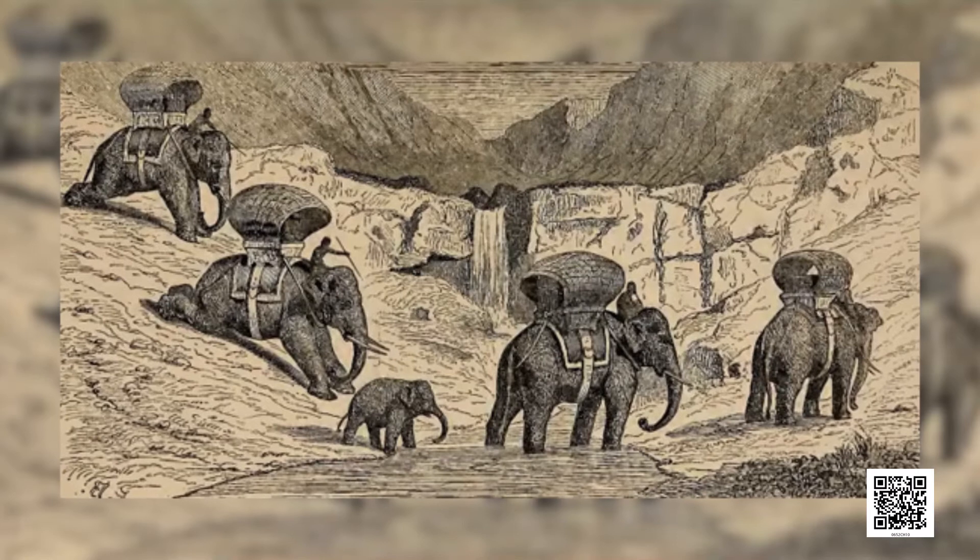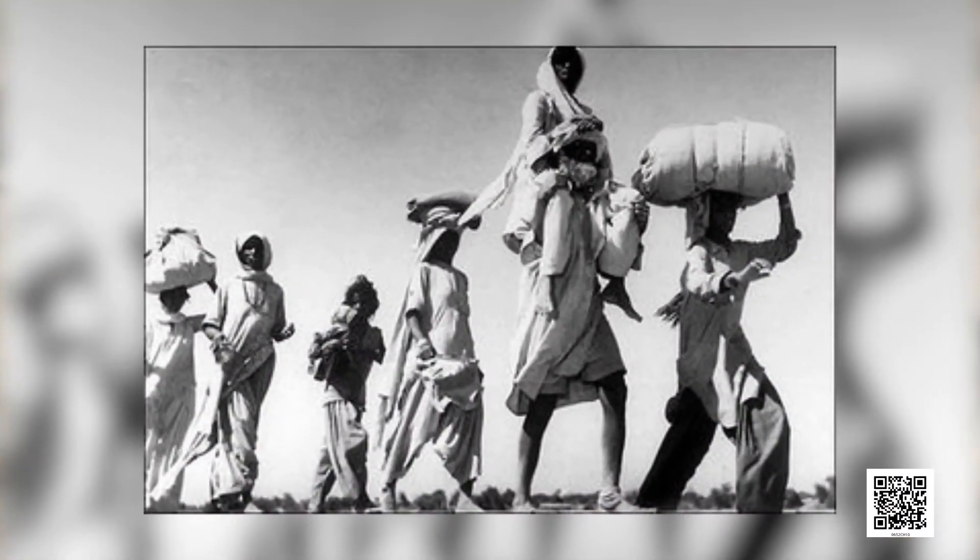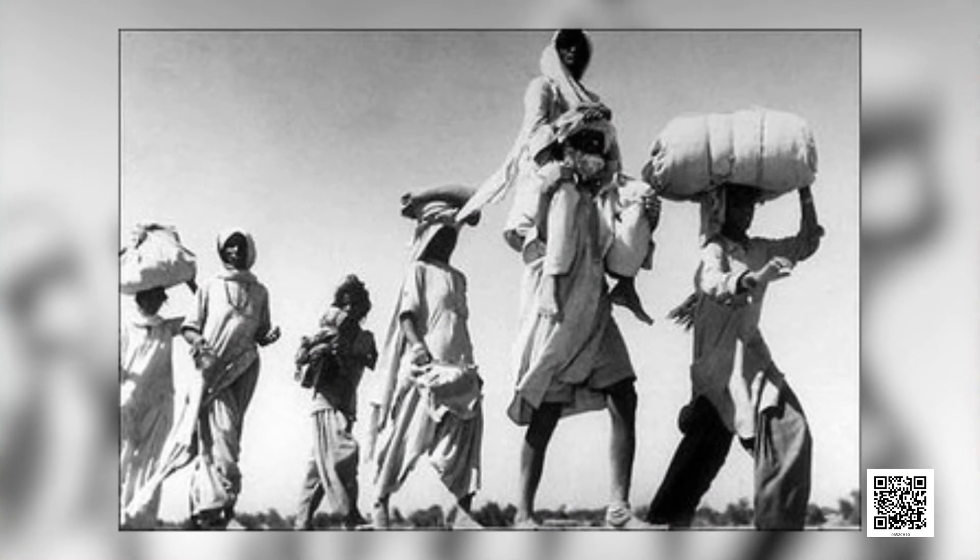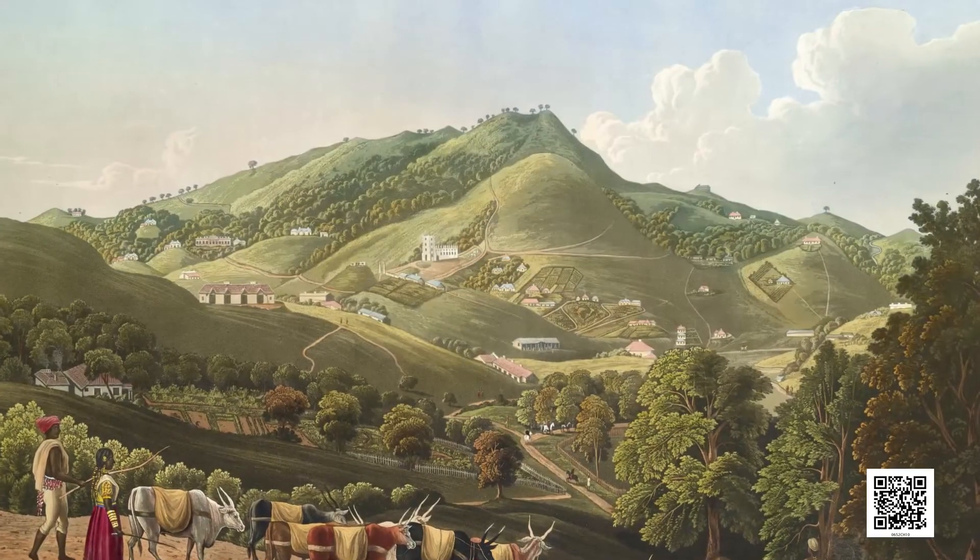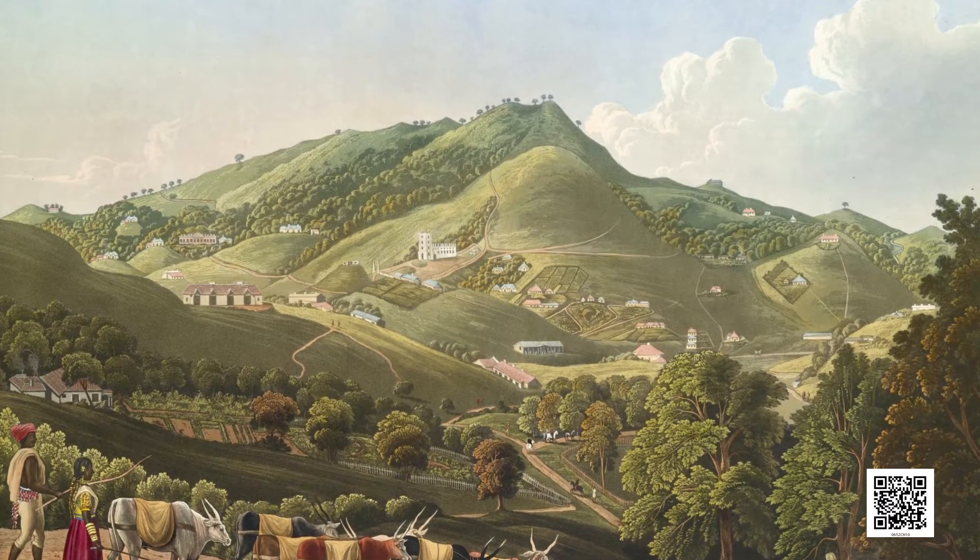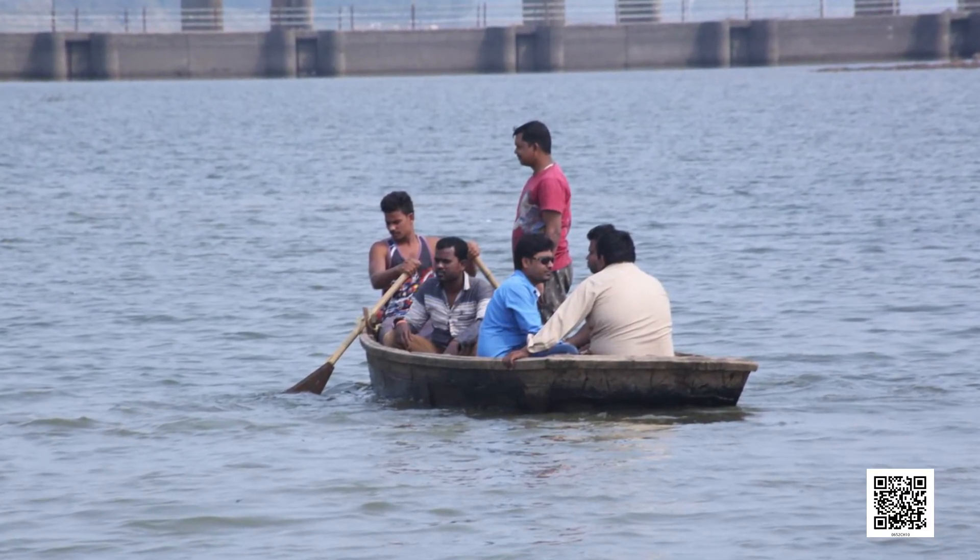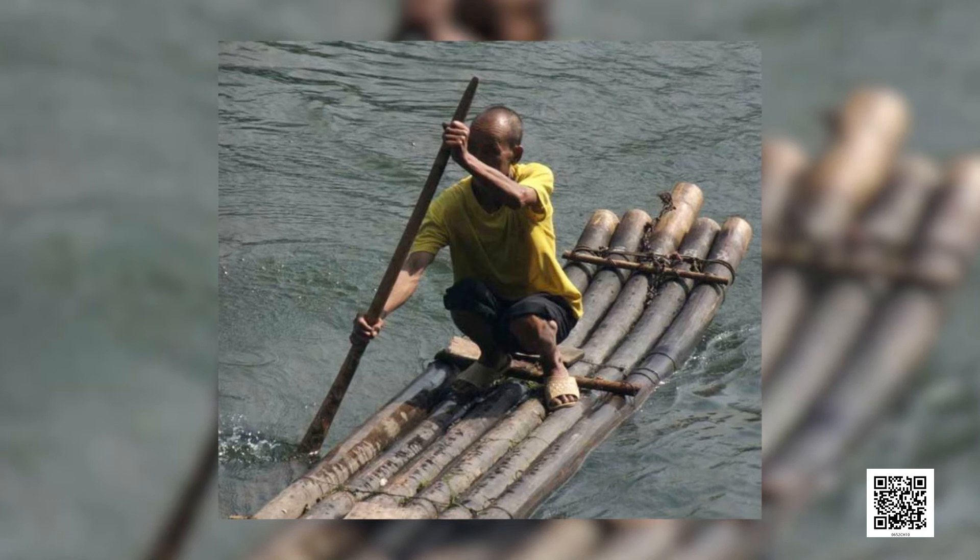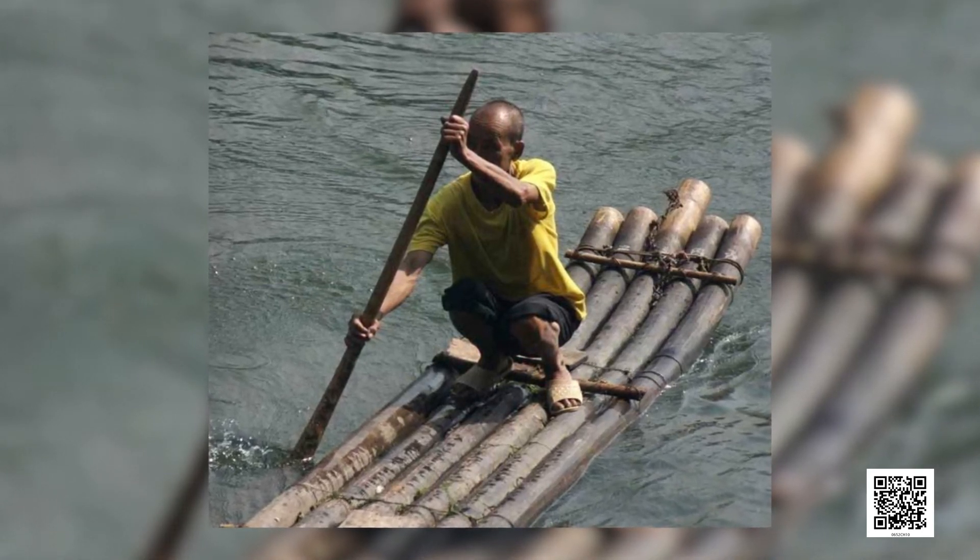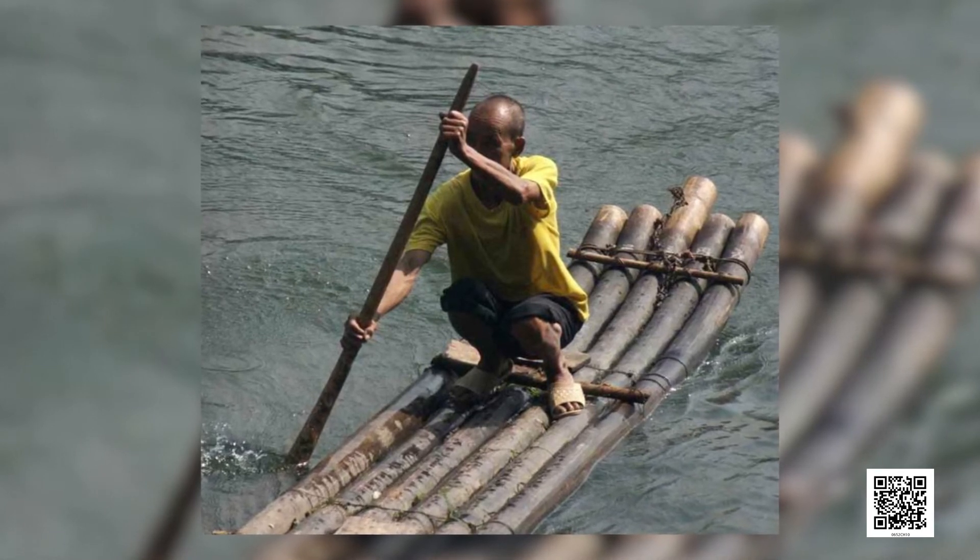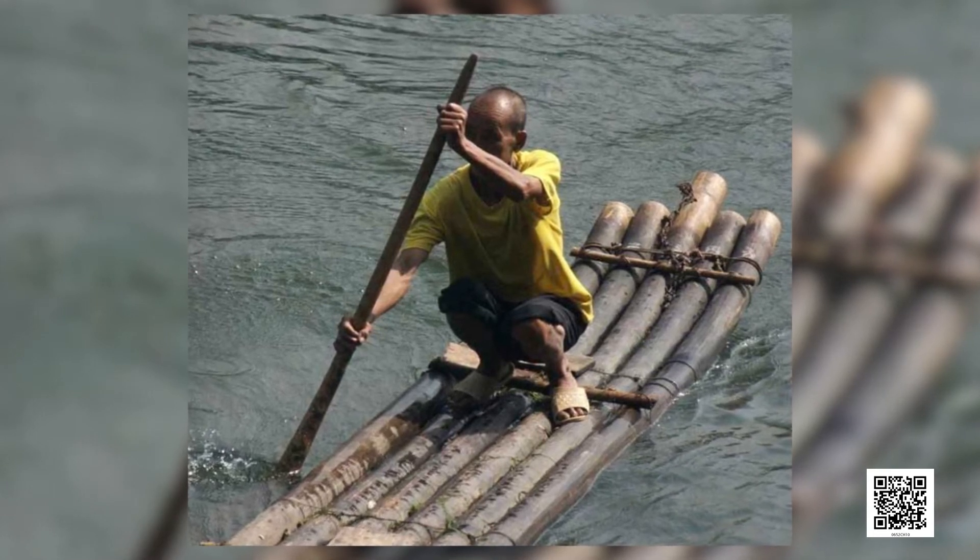Long ago, people did not have any means of transport. They used to move only on foot and carry goods either on their back or using animals. For transport along water routes, boats were used from ancient times. To begin with, boats were simple logs of wood in which a hollow cavity could be made. Later, people learnt to put together different pieces of wood and give shapes to the boats.